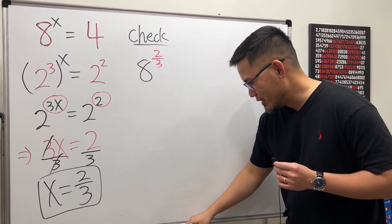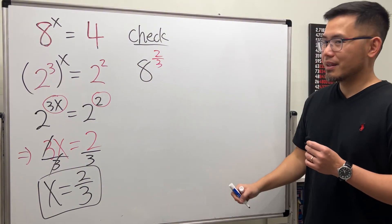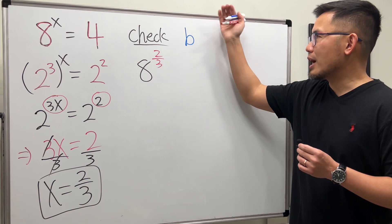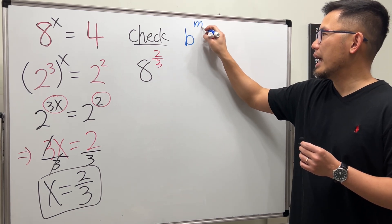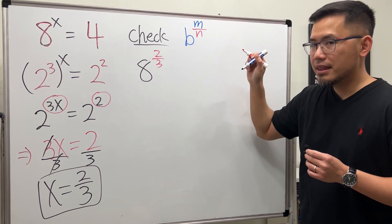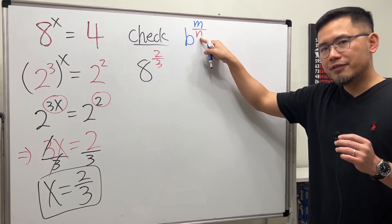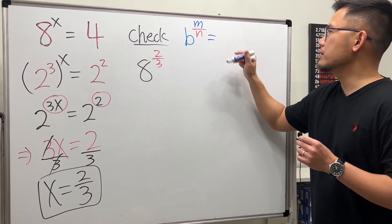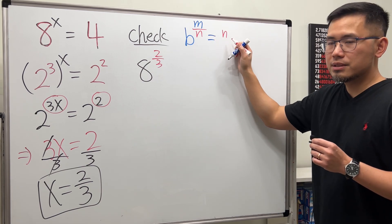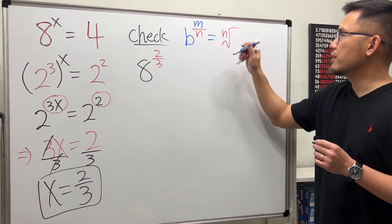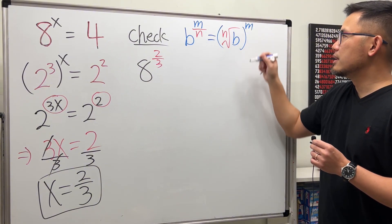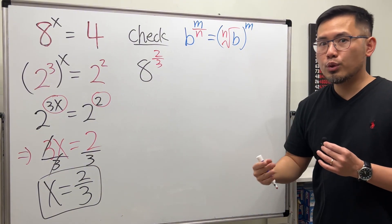Don't worry, let me show you. Whenever we have some base b raised to some rational exponent, let's say m over n, pay attention to the n first. Change that to a radical. This right here equals you take the nth root of the base first, and then at the end put the power on the outside.